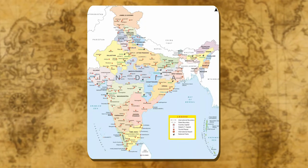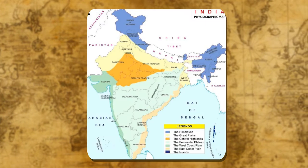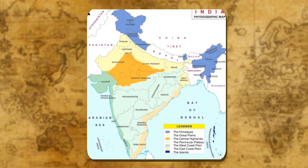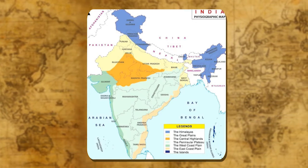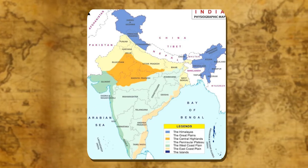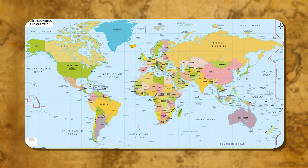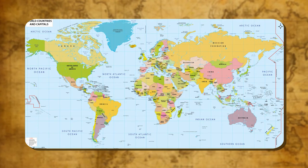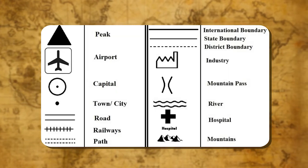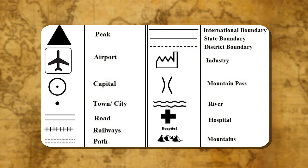Various colours are also used to show certain physical features. For example, plains are shown in green colour, plateaus in yellow, mountains in brown, ice-capped mountains in white, and all water bodies in blue colour. Blue colour is used to show water bodies, oceans, rivers or small lakes. All over the world, there has been some agreement regarding the use of symbols and colours. Symbols used all over the world in various maps are called conventional symbols. One can read a map using symbols.